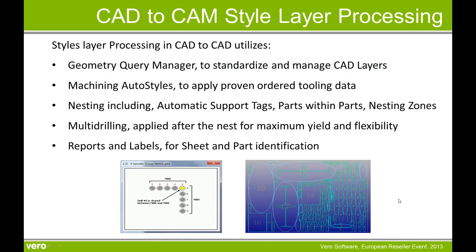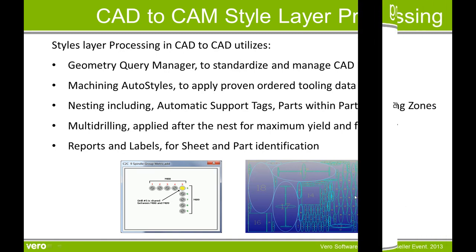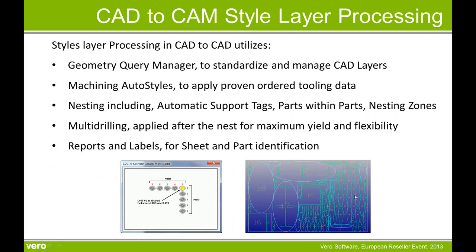This is a summary of CAD to CAM style layer processing. Style layer processing utilises the geometry query manager to standardise and manage the CAD layers prior to the machining auto styles. The machining auto styles apply proven, ordered tooling data to CAD layers including data such as feed speed, spindle speed, and depth of cut. Nesting includes features such as automatic support tags, parts within parts, and nesting zones. Multi-drilling is applied after the nest for maximum yield and flexibility. NC programs, reports, and labels for sheet and part identification are also created in the background.